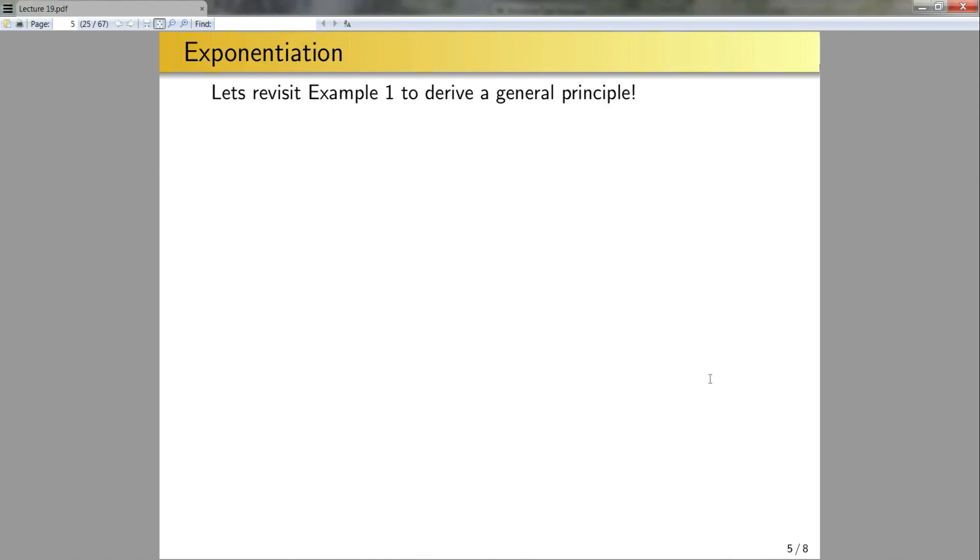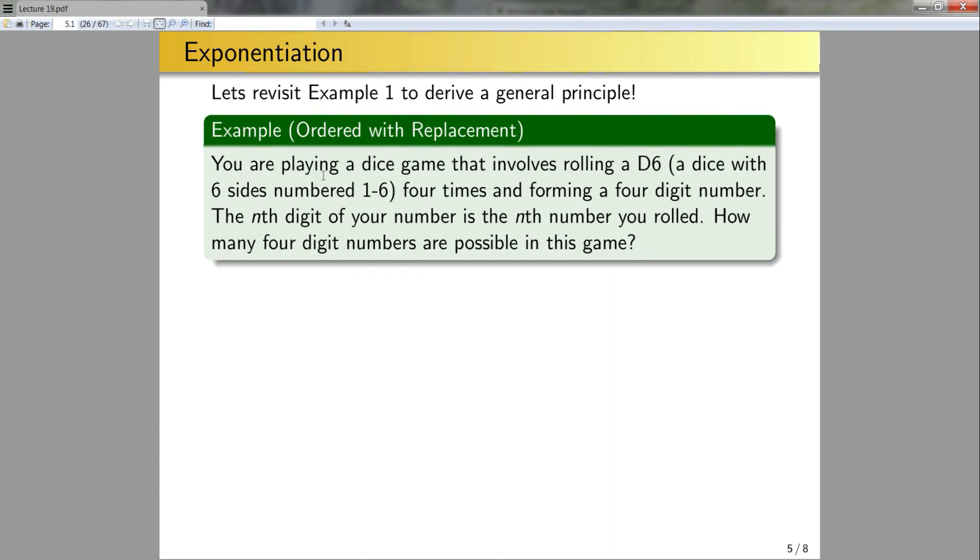Now let's talk about something new, exponentiation. Let's revisit example one to drive a general principle. Example one was the dice example. We're playing a dice game that involves rolling a d6. We form four-digit numbers by rolling four dice. The question was, how many four-digit numbers were possible in this game? The answer to this was 6 to the 4th, because there's six possibilities for each roll, and there were four dice rolls.